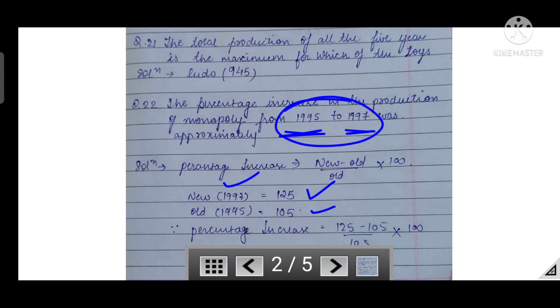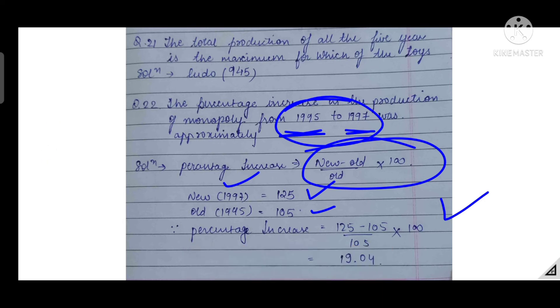I will take 125 and the previous figure is 105. This is something you have to observe: 1995, 1997. You don't consider 1995 as new value and 97 as old value. We will put all these things in the formula and get the answer: 19.04. You can see this is an approximate answer. If the MCQ pattern is given, you can write it as 19 wherever the option is given.